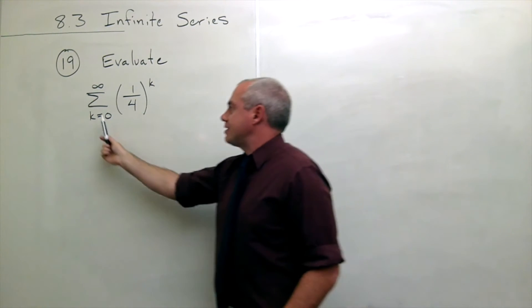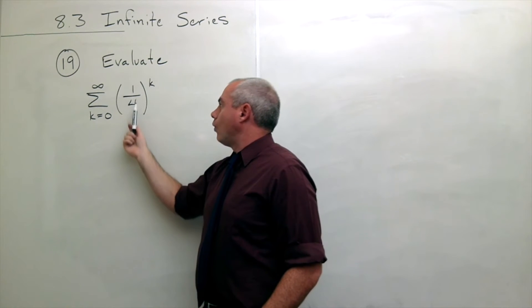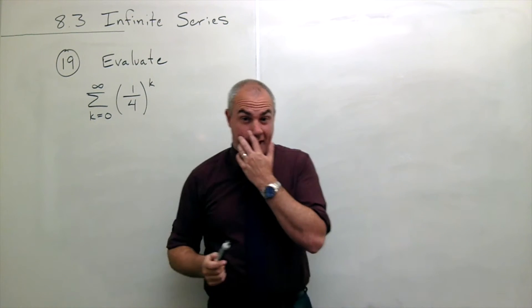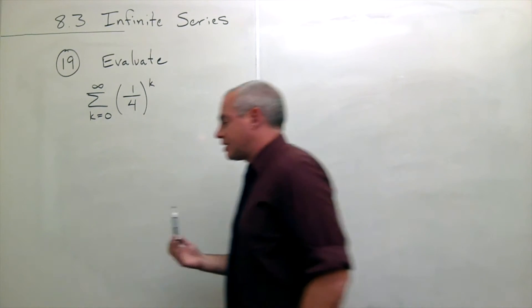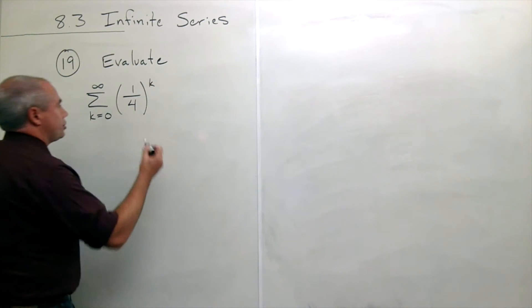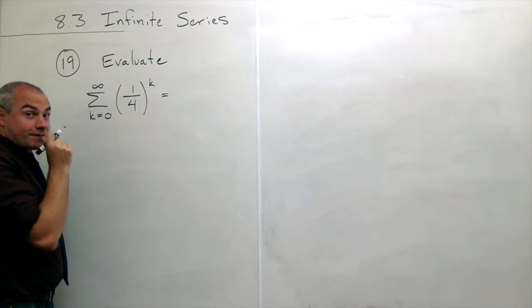We'd like to evaluate the sum k going from 0 to infinity of 1 over 4 to the k. Now first thing we need to recognize is that this is a geometric series and the way that we can see that this is geometric is we just write out a few terms of this series.